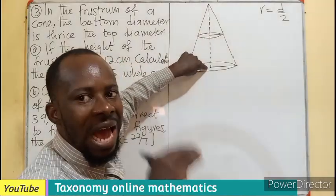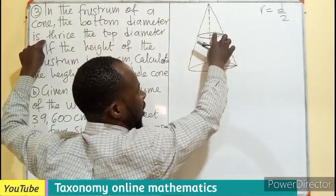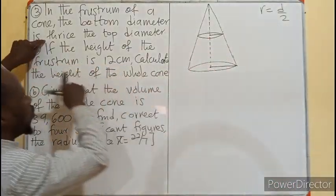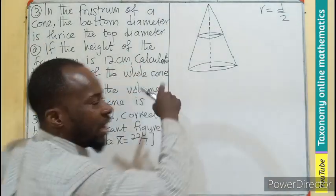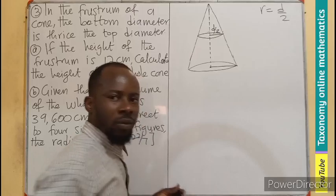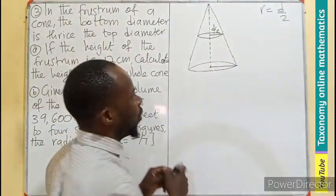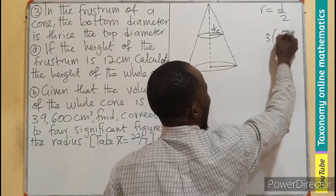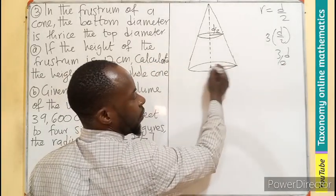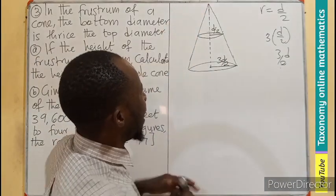From here to this place will give us the height of the smaller cone above. From here to this place gives the height of the frustum. The bottom diameter is 3 times the top diameter. Since we don't know the value for the diameter, we'll just say this is the radius, which is diameter over 2. That's the radius of the smaller cone. This radius is going to be 3 times diameter over 2, which is 3D over 2. This radius here is 3D divided by 2.